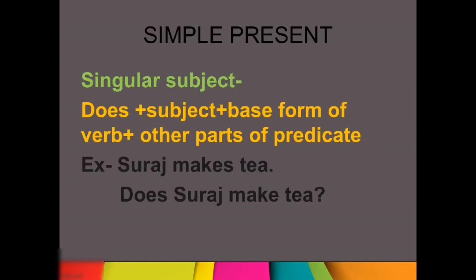First of all we are talking about simple present tense. Agar humara sentence simple present tense mein hai and we are having singular subject — you all know what do we mean by singular and plural: singular is one, and plural more than one. If we are having singular subject, aap kaise question form karoge? First of all you will put does, then subject, then base form of the verb — base form means first form of your verb — and other parts of the predicate, meaning the rest of the sentence.